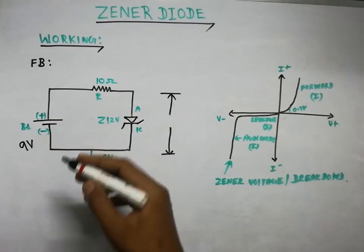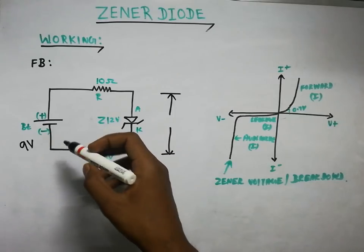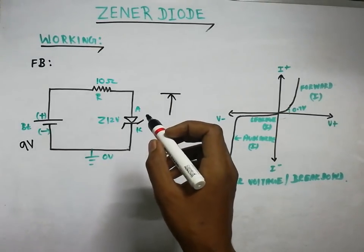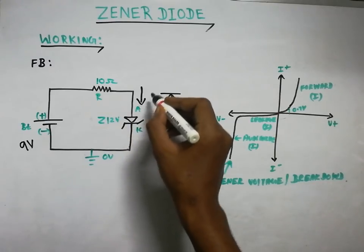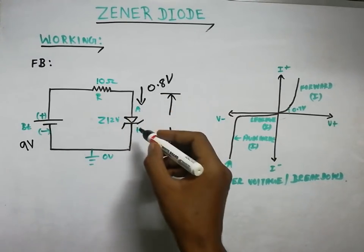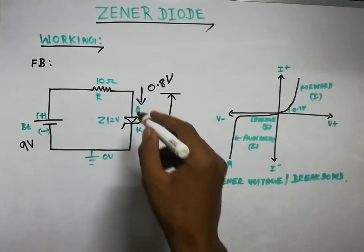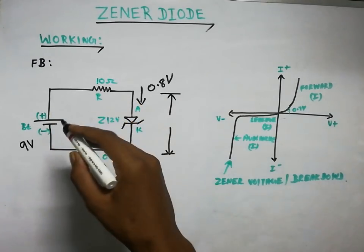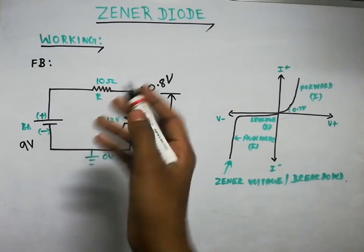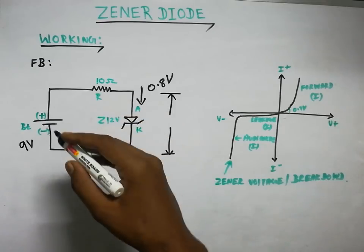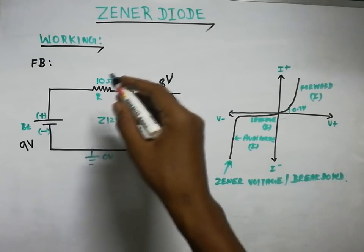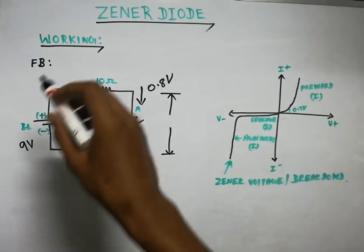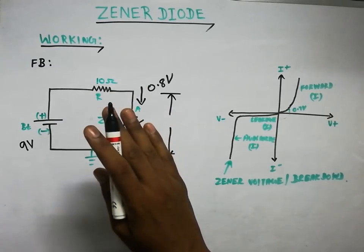We have a 12-volt Zener diode. When we set the input to 9 volts, the load consumes some voltage and the remaining reaches the diode. When the voltage reaches around 0.7 to 0.8 volts, that is the cut-in voltage. The diode conducts like a normal diode from 0.8 volts onward. Below that it will be blocked.